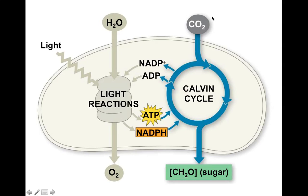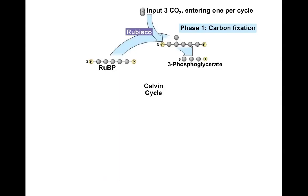The Calvin cycle takes carbon dioxide from the air, reducing power from NADPH — the fancy electron bus — and the power of phosphorylation from ATP, and produces sugar. We get ADP back, NADP+ back, and sugar out. Let's go through these three steps one at a time.